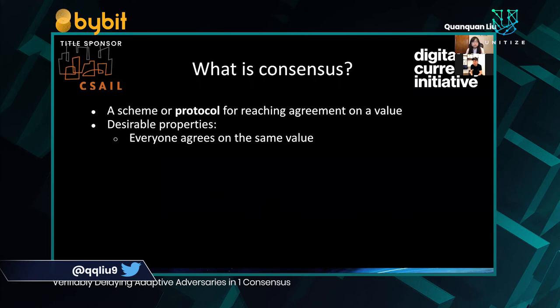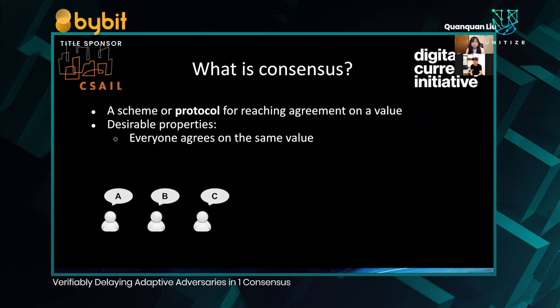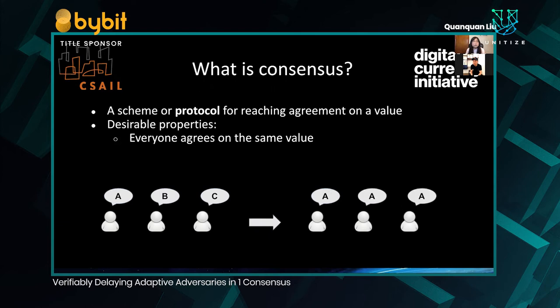Just very quickly to start, I will define consensus. Consensus involves schemes or protocols meant to ensure participants reach agreement in a decentralized network. Some desirable properties of consensus include having everyone agree on the same value. Suppose you have a set of participants which propose the values A, B, C. These values can be anything — for example, blocks you may want to add to the blockchain or functions you want to execute in a distributed database or codebase. If everyone talks to everyone and is honest about their proposals, they can simply decide on a value like the lexicographically first value, which in this case is A.